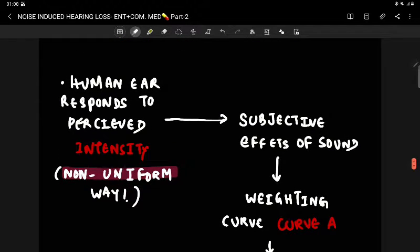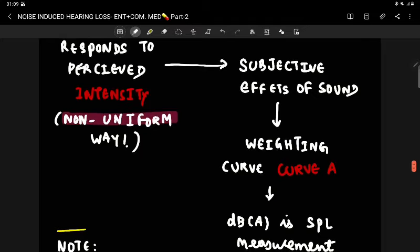The human ear responds to noise based only on perceived intensities. That means it responds in a non-uniform way, thereby this becomes a subjective effect to a human being.